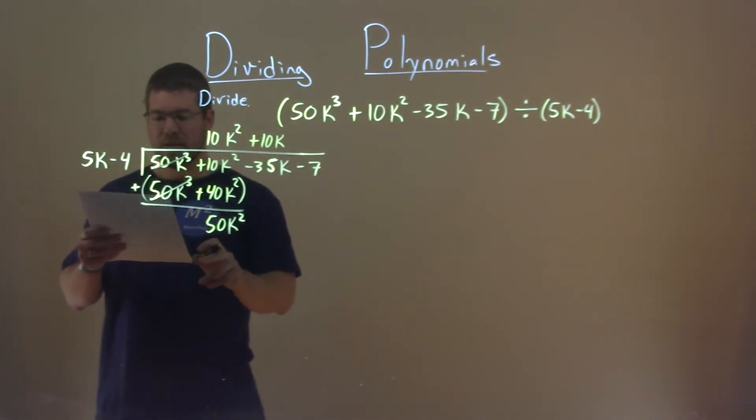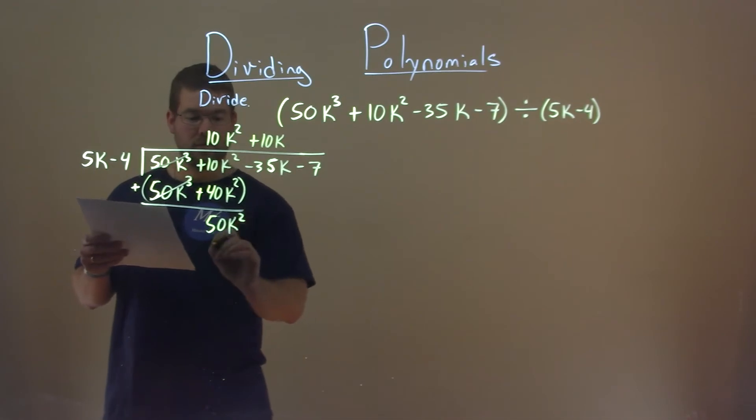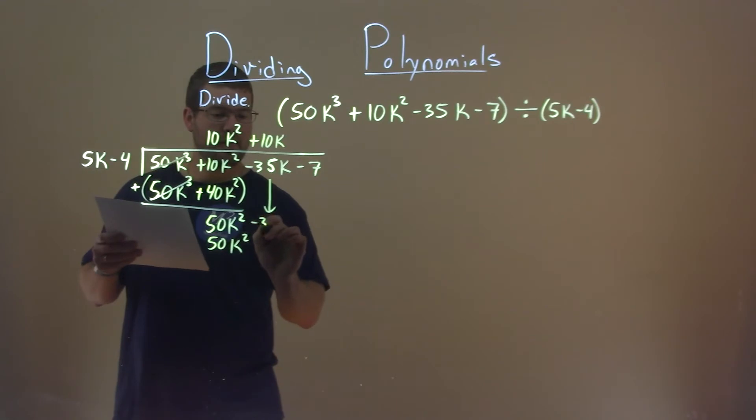10k times 5k is that 50... oh, 50k squared. Almost forgot. Bring down the minus 35k.